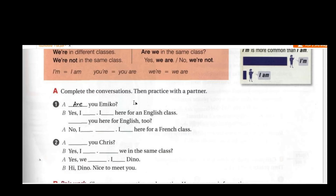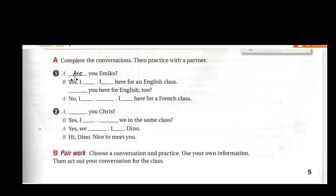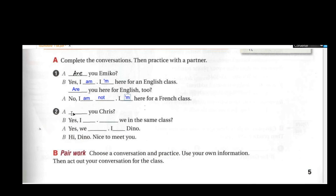Number one: 'Are you Amy?' — 'Yes, I am. I'm here for an English class.' 'Are you here for English too?' — 'No, I am not. I'm here for a French class.'